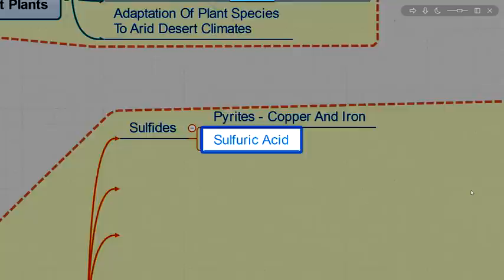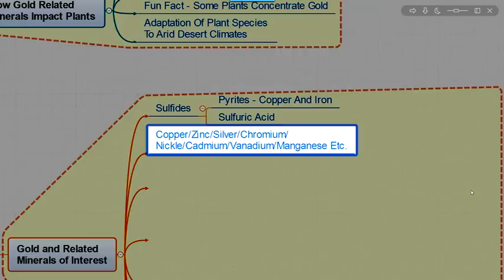Copper, zinc, silver, chromium, nickel, cadmium, vanadium, manganese, etc. All these play a role, a special role, because these kinds of metals typically have a very big impact on plants and plant life.